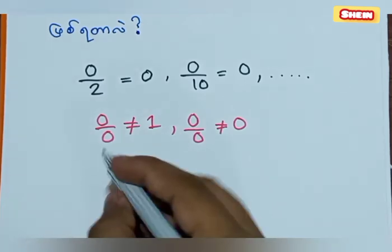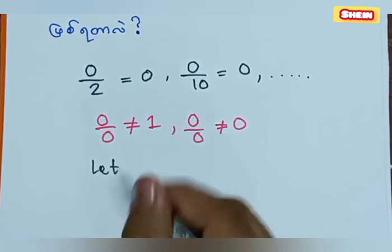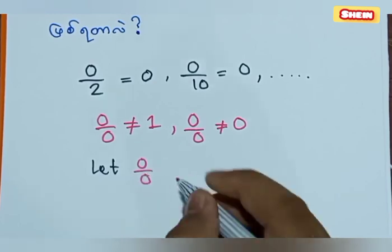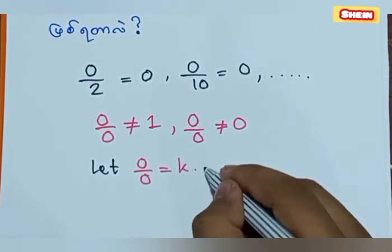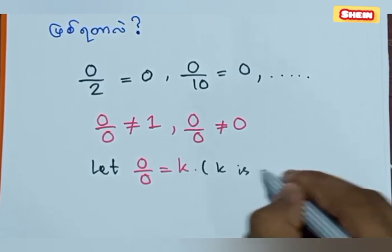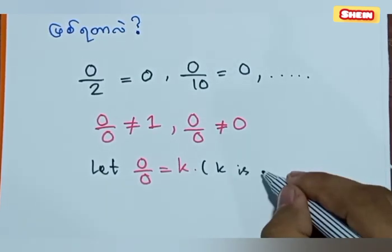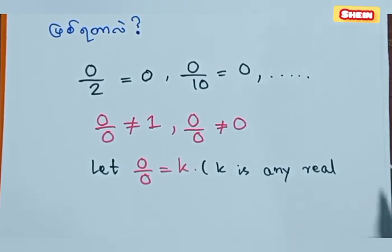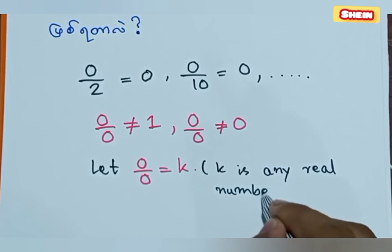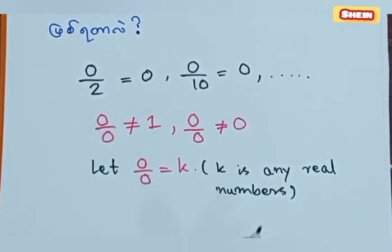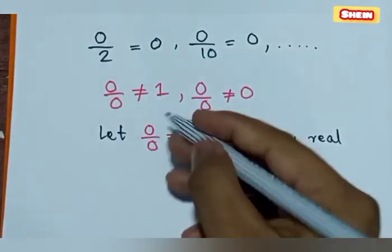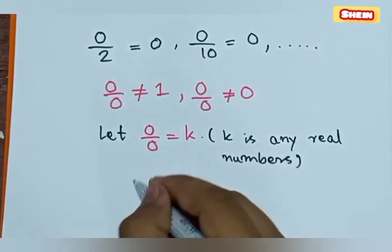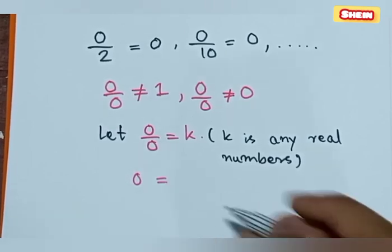Let 0 over 0 equal to some general key. So we're going to highlight that. I imagine a loop — key is a real number. Yes, generally key is... okay, is an area number. The denominator is zero.